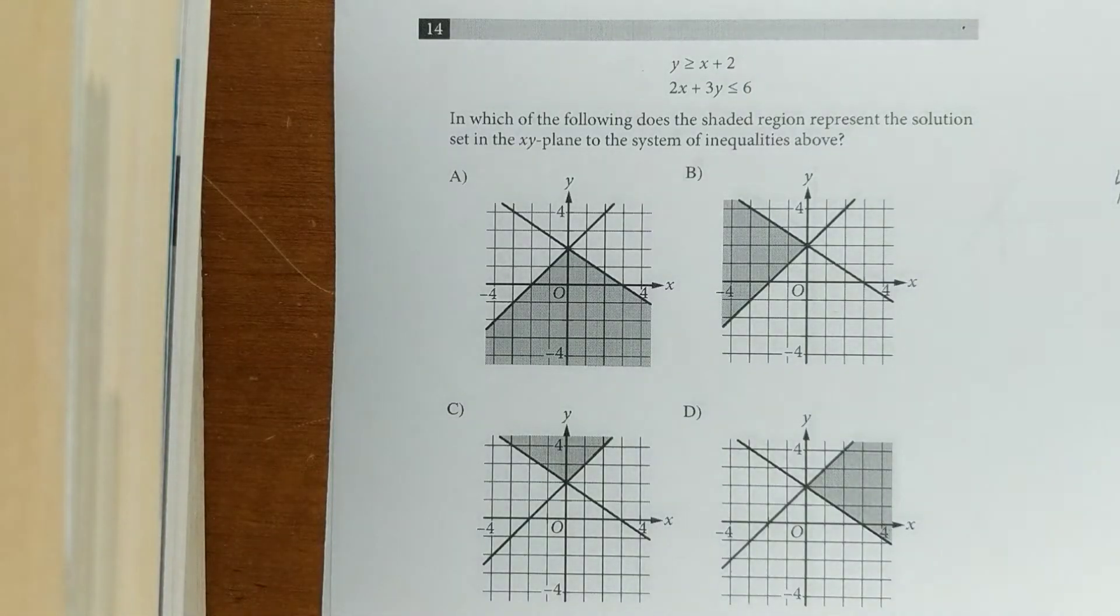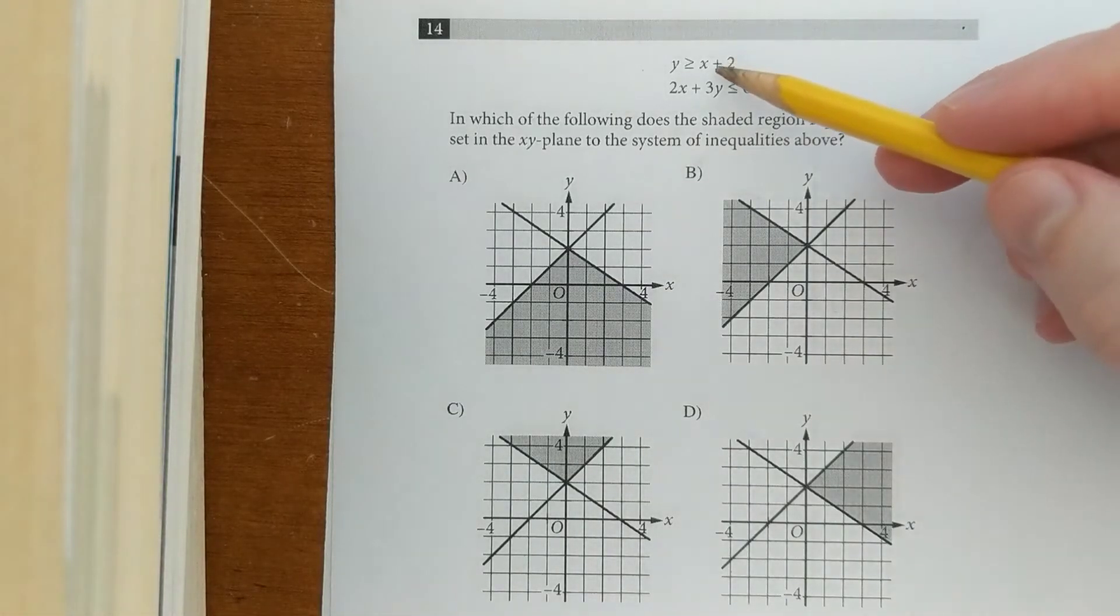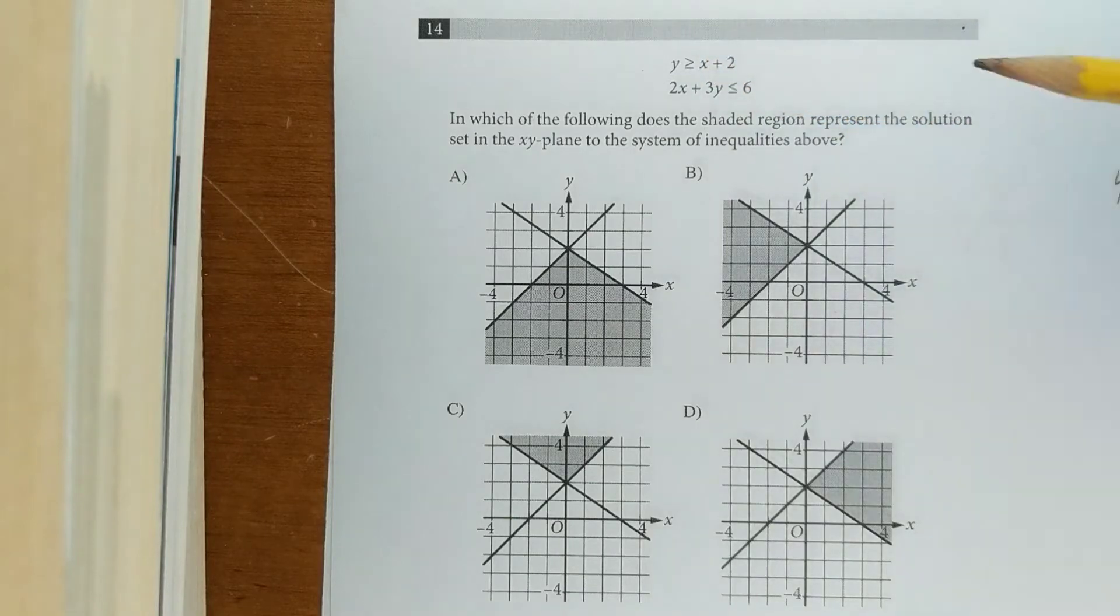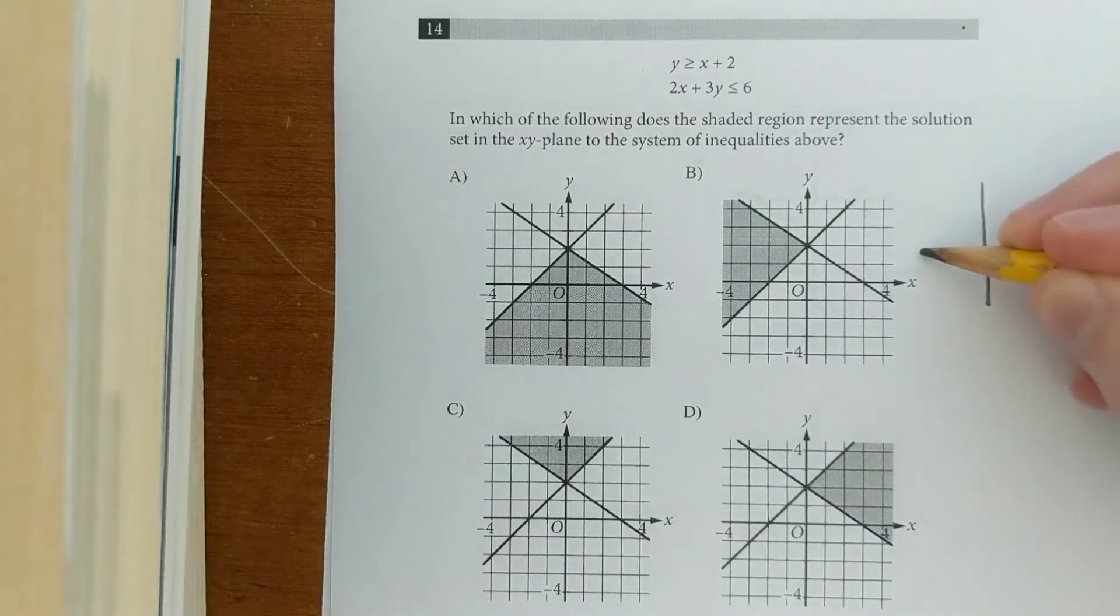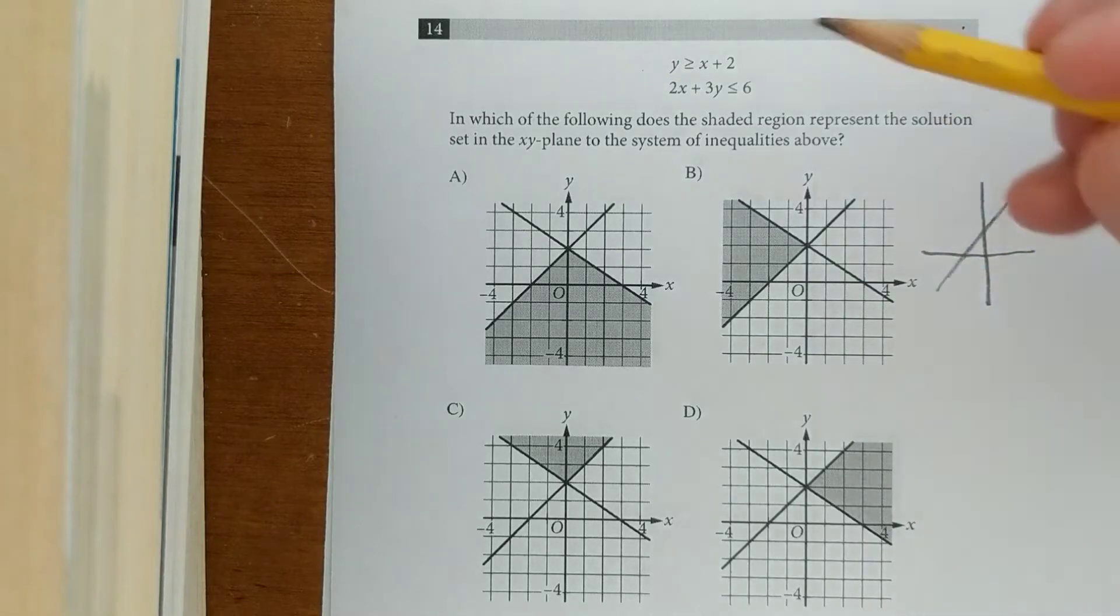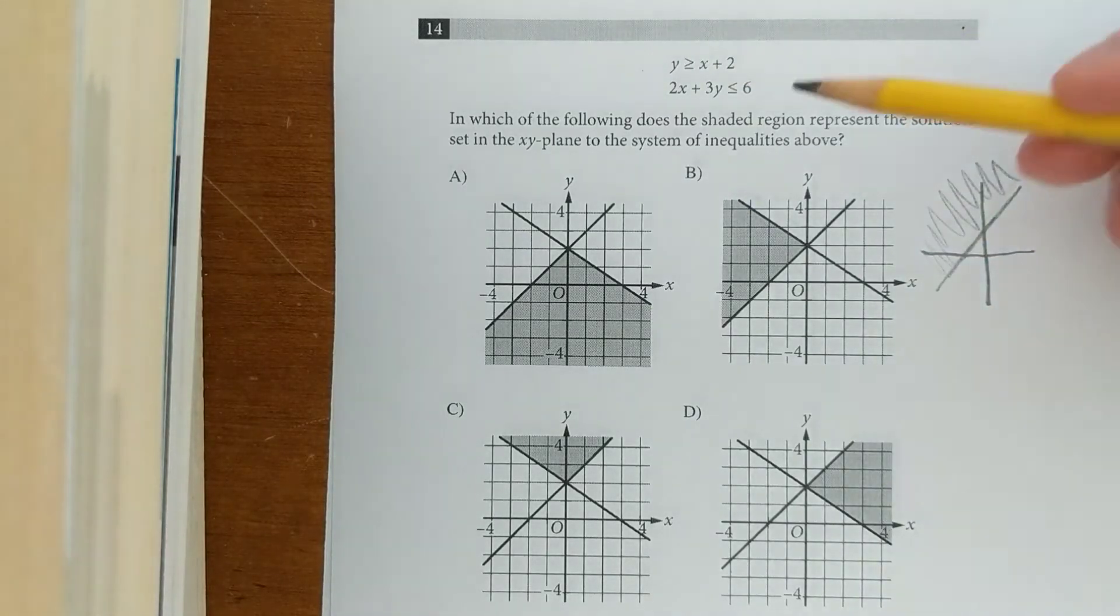Here's another system of inequalities. We'll just do one at a time. So here we've got a positive slope and a positive y-intercept. We'll just sort of sketch that ourselves, something like this. And it's greater than or equal to. That means that it's shaded above.